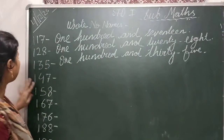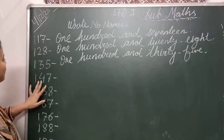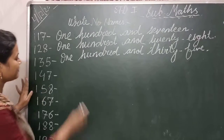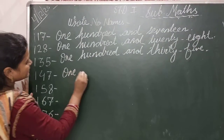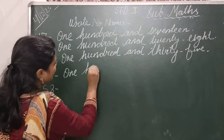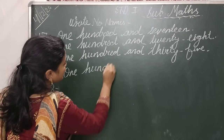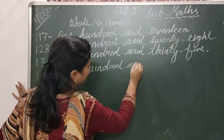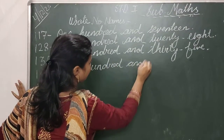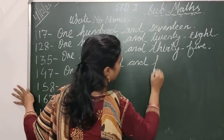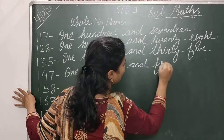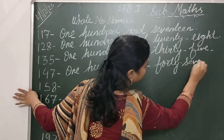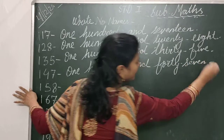Okay, then your next number is 147. Okay? O-N-E, one hundred, H-U-N-D-R-E-D, and forty-seven. F-O-R-T-Y, forty. S-E-V-E-N, seven. One hundred and forty-seven.